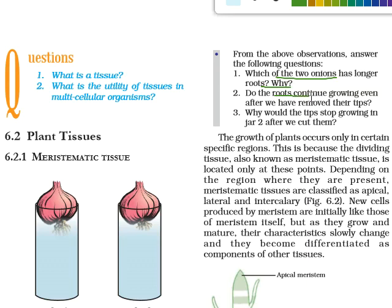Do the roots continue growing after we remove the tips? No. Why? Because the meristematic tissues are gone — the root tip is cut, so meristematic tissue is removed. Without meristematic tissue, cell division does not happen, cell numbers do not increase, and therefore there is no growth. If meristematic tissues are present, cells divide and the root grows. That is why jar two stops growing after cutting.